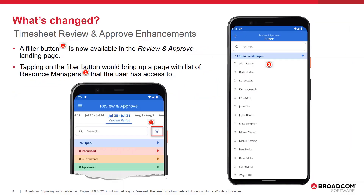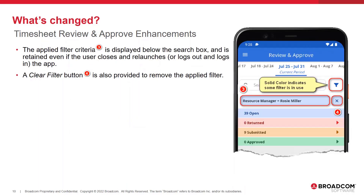A filter button is now available in the Review and Approve page. Tapping on the filter button brings up a page with a list of resource managers that the user has access to. Once a filter criteria is chosen, the filter icon turns solid indicating that a filter is in use. The applied filter is displayed below the search box and is retained across logins. To remove the applied filter, a Clear Filter button is provided.